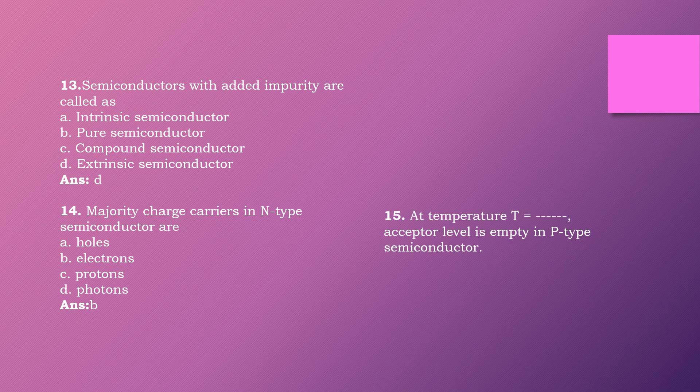Question fifteen: At temperature T equals to dash, the acceptor level is empty in a P-type semiconductor. Options are: T equal to zero Kelvin, T equal to zero degree centigrade, T greater than zero Kelvin, T less than zero Kelvin. The right answer is option A: T equals to zero Kelvin.